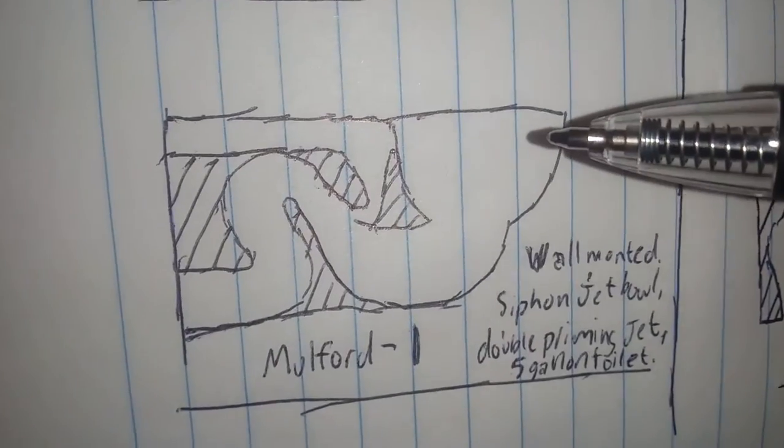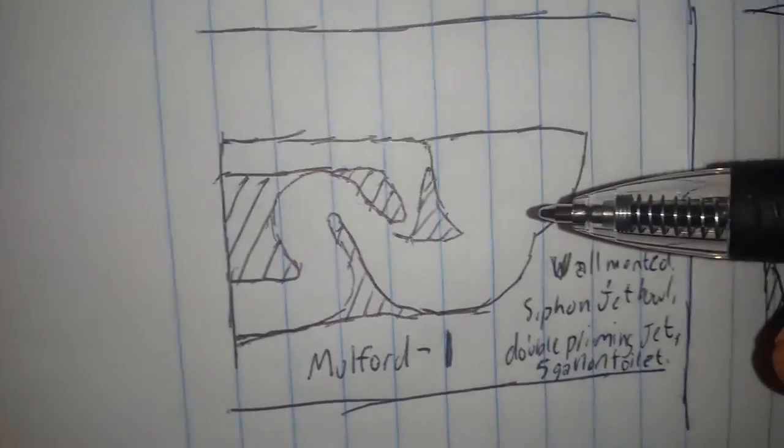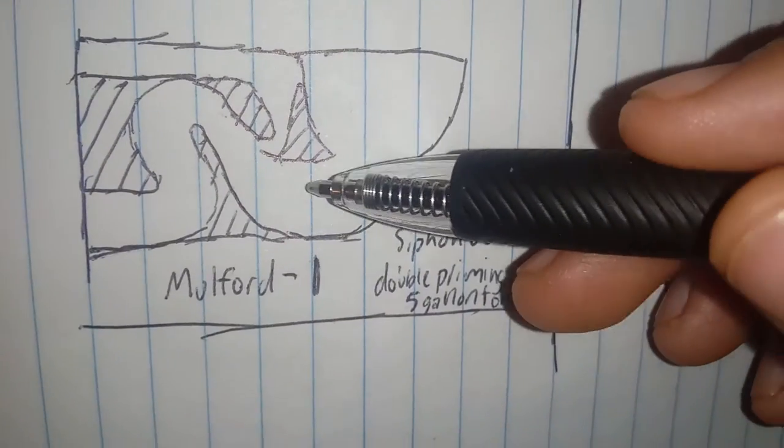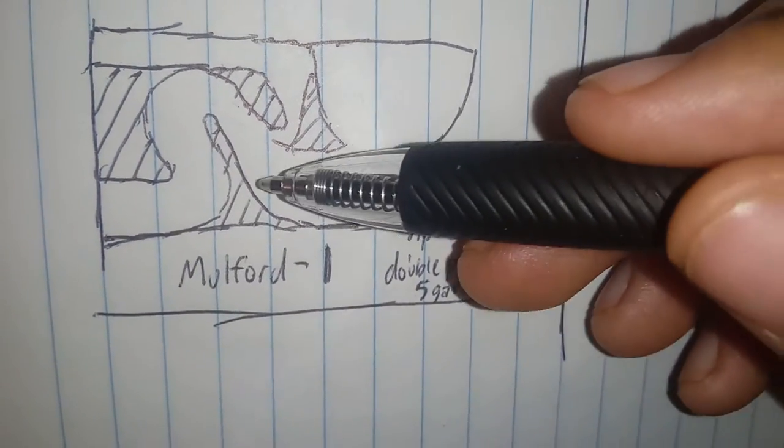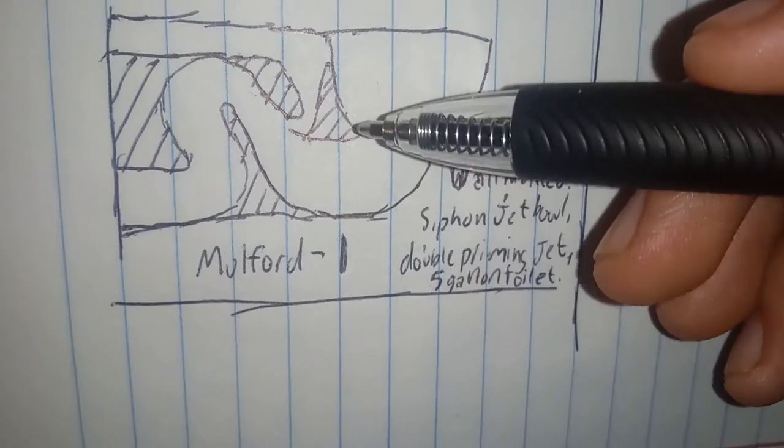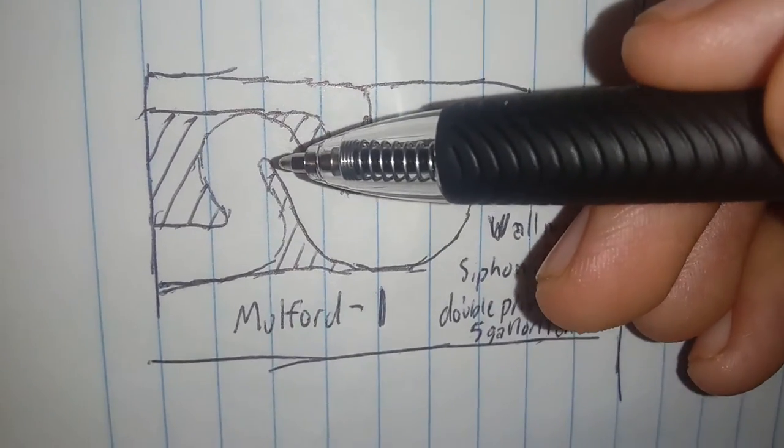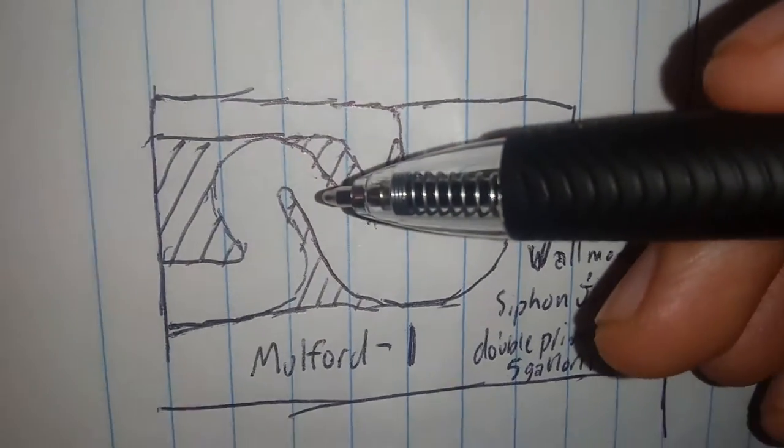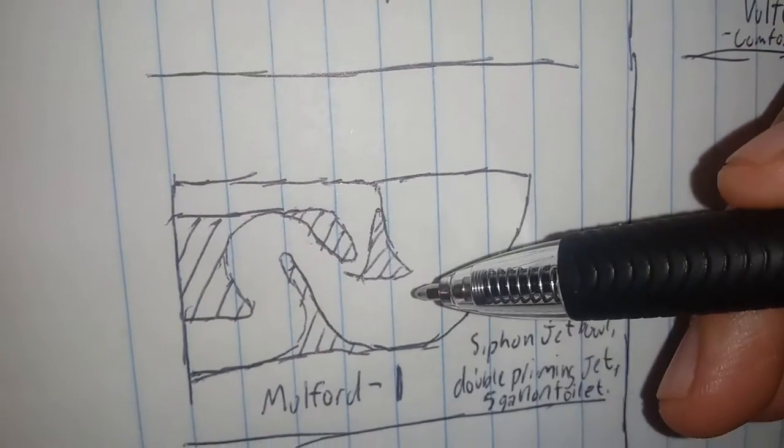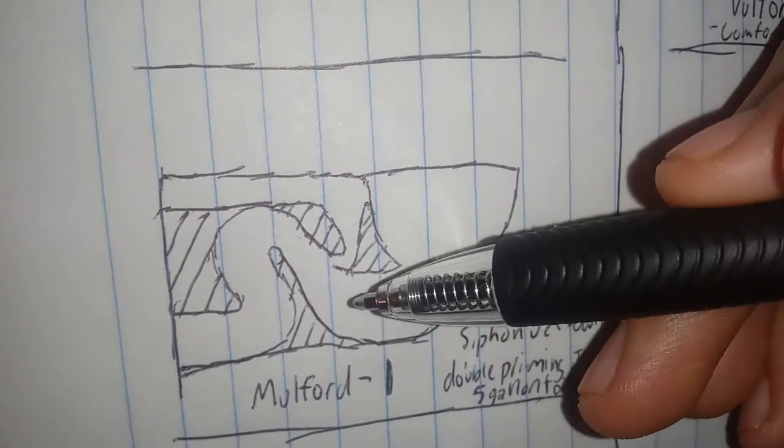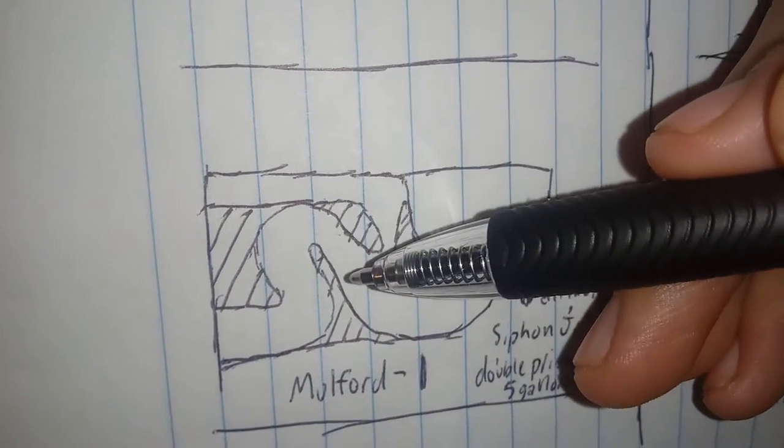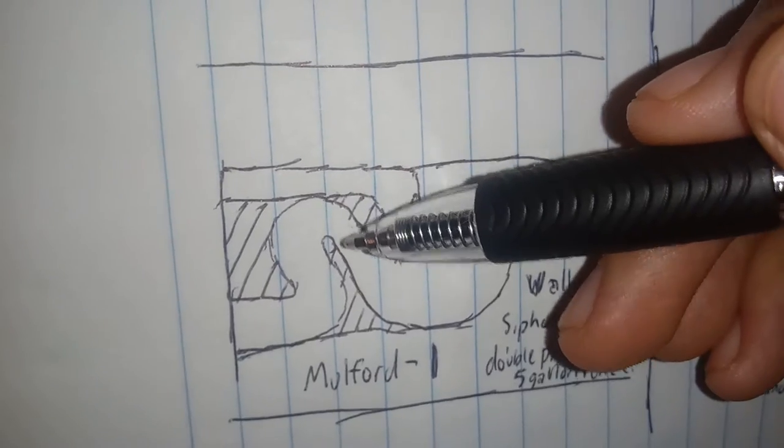Moving on. This is the Mulford, which is a siphon jet. Notice how the tunnel opening in the trapway is extremely large. And notice how when the tunnel goes up, it gets smaller. Because of how big this opening is, it makes the water slow down,